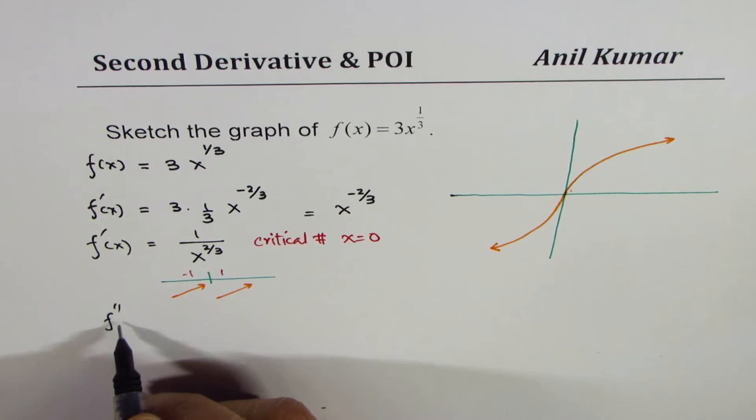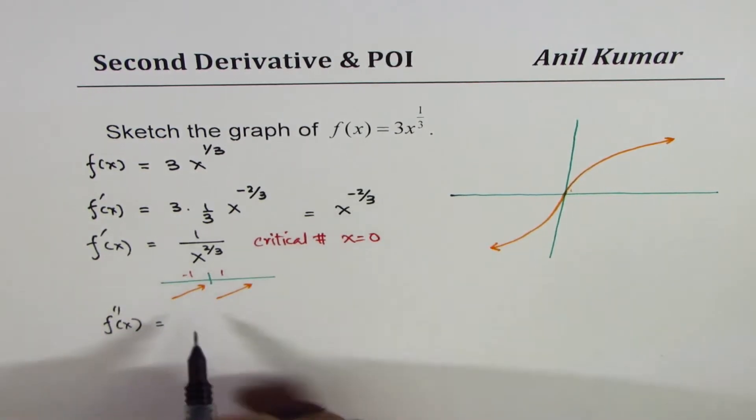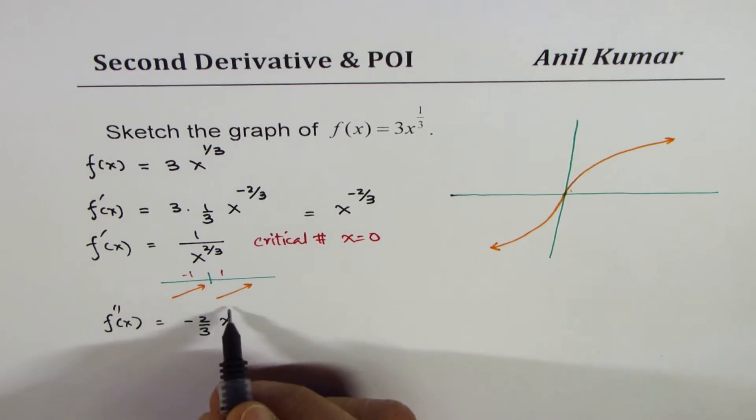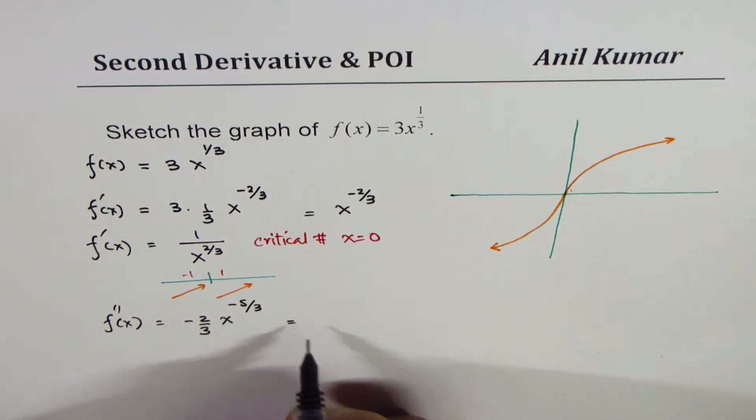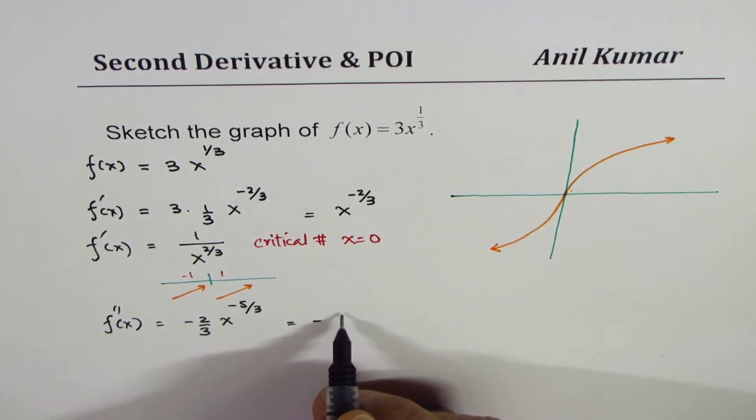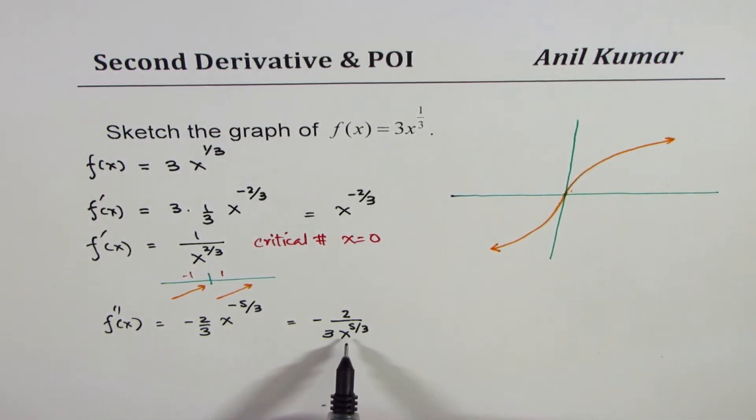Now, let's verify with second derivative. Second derivative will be, we'll use this equation, minus 2 over 3 times x to the power of minus 2 over 3 minus 1, which gives us minus 5 over 3. Or you could write this as minus 2 over 3 times x to the power of 5 over 3.